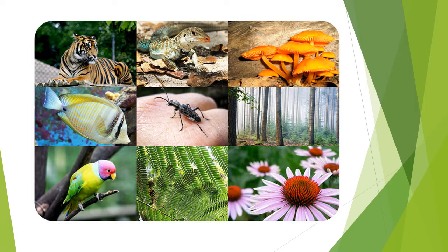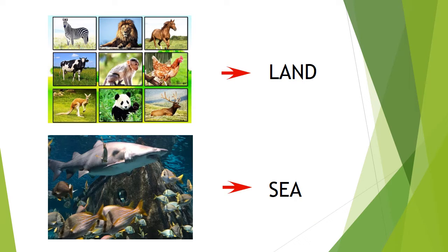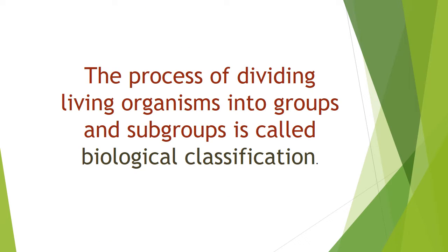According to the 2011 census, around 87 million species of living organisms are found on the earth, including land and sea. To study such a vast number, it was essential to divide them into groups. So groups and subgroups were created considering the similarities and differences among the living organisms. This process of dividing living organisms into groups and subgroups is called biological classification.